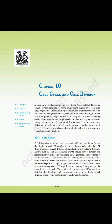10.1 Cell Cycle. Cell division is a very important process in all living organisms. During the division of a cell, DNA replication and cell growth also take place. All these processes — cell division, DNA replication, and cell growth — have to take place in a coordinated way to ensure correct division and formation of progeny cells containing intact genomes. The sequence of events by which a cell duplicates its genome, synthesizes the other constituents of the cell, and eventually divides into two daughter cells is termed the cell cycle.